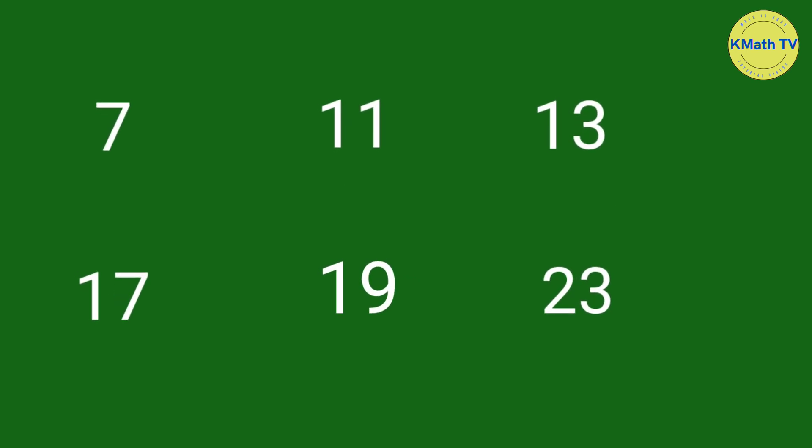Other examples of prime numbers are 7, 11, 13, 17, 19, and 23. Each number has only two factors, 1 and the number itself.